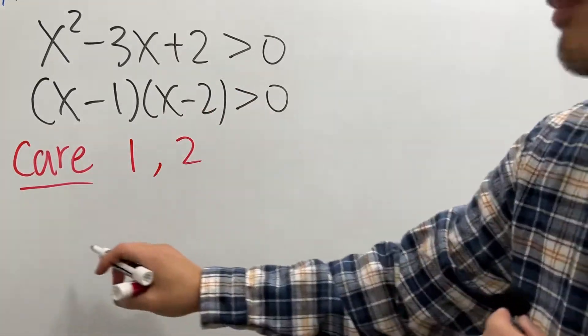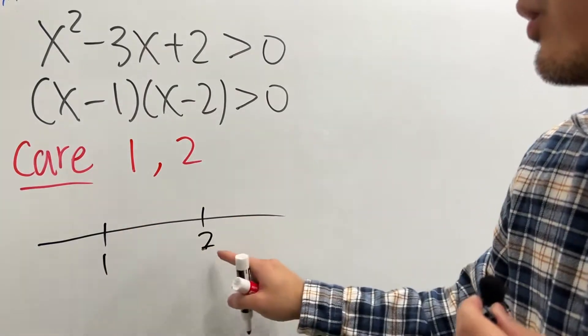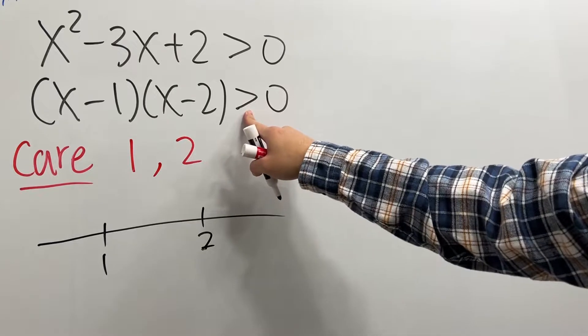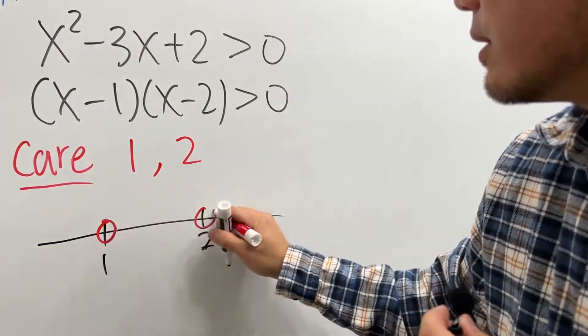And then draw a number line. Here is 1, and here is 2. We care about 1 and 2, but because the inequality is greater than, so we do not want to equal that. So, open circle here, open circle here.